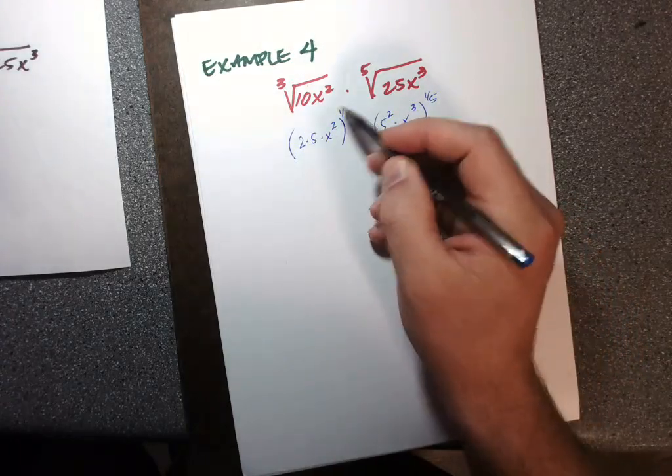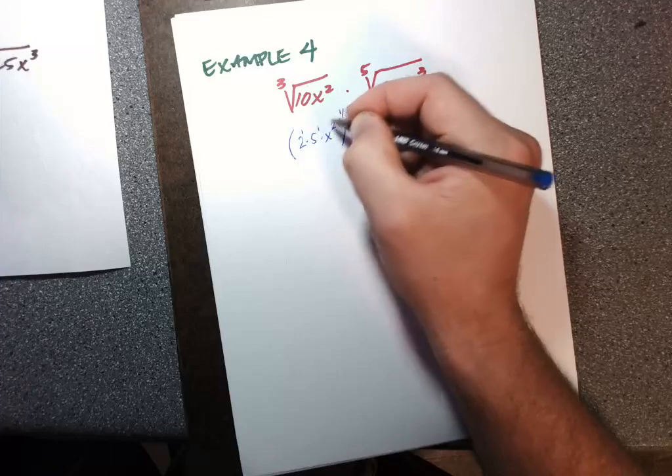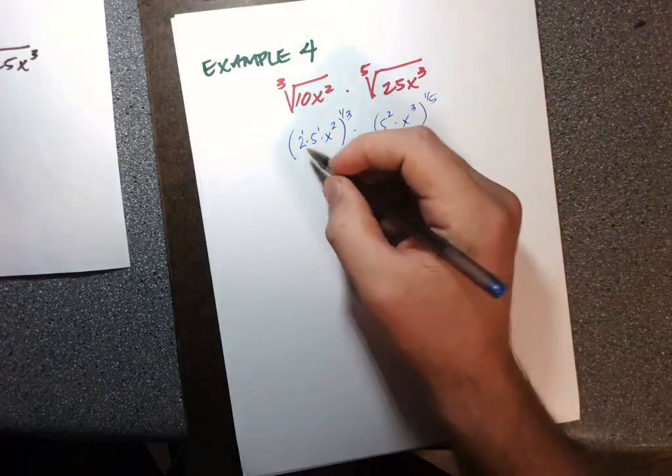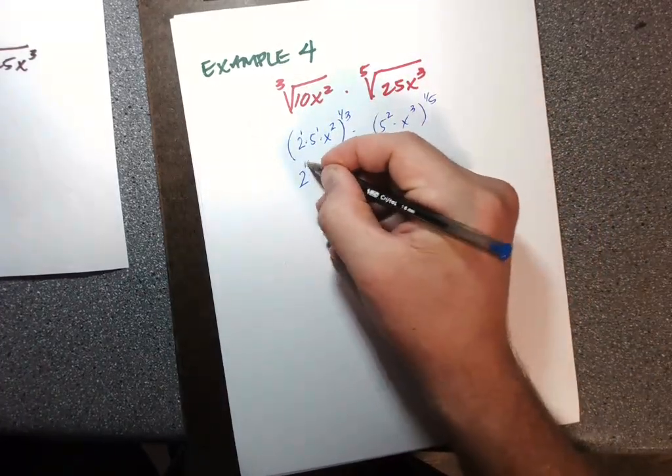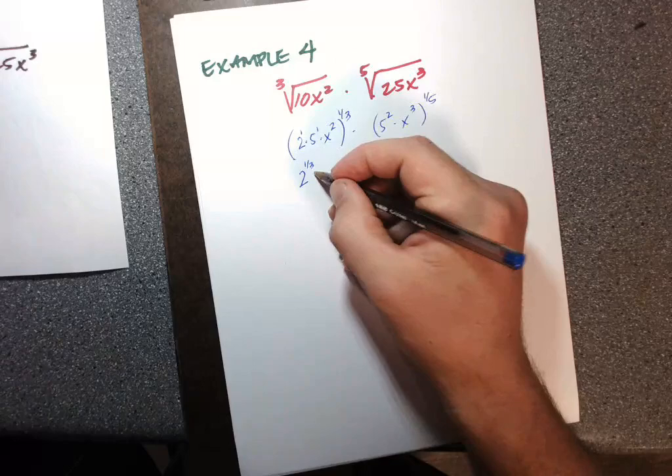So this is 2 to the first, 5 to the first, x squared. And this one-third is acting on all three pieces. So the 2 to the first becomes 2 to the one-third by way of multiplication. Same story here, and then the x is 2 times one-third, which is two-thirds.